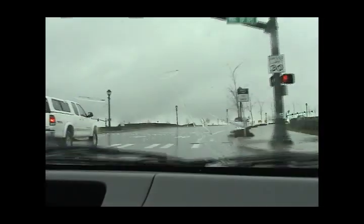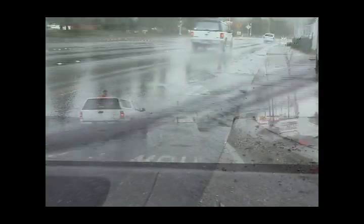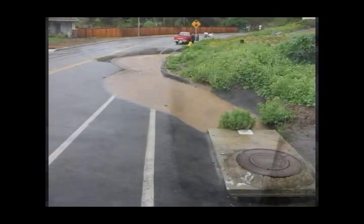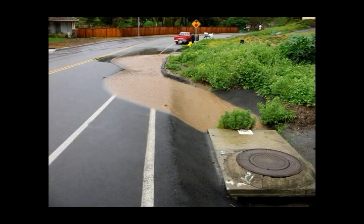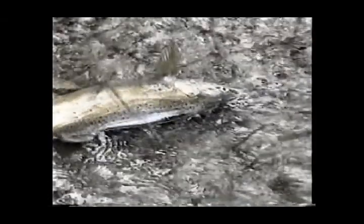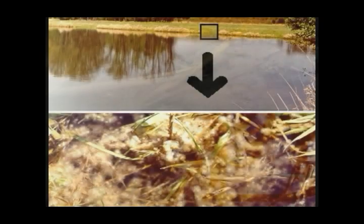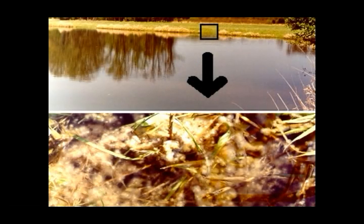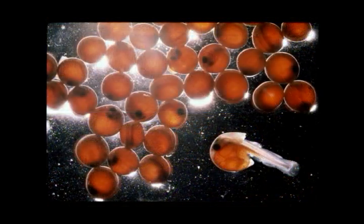Turbidity often increases sharply during a rainfall, especially in developing watersheds which typically have relatively high proportions of construction with open areas of soil. Suspended materials such as soil particles and other materials in water can clog fish gills, reduce resistance to disease in fish, lower growth rates, and affect egg and larval development. As the particles settle, they can blanket the stream bottom, especially in slower waters, and smother fish eggs and aquatic insects.